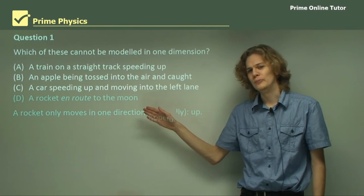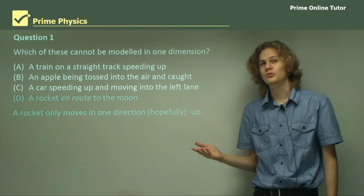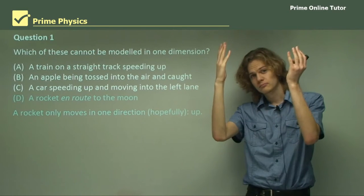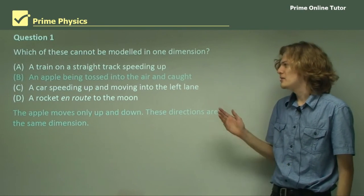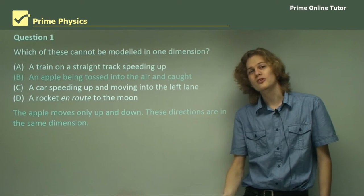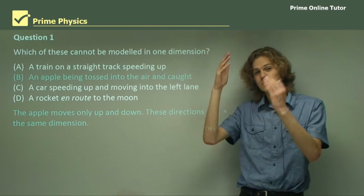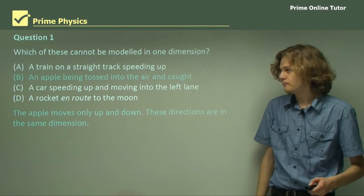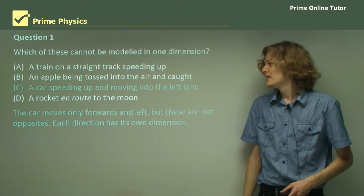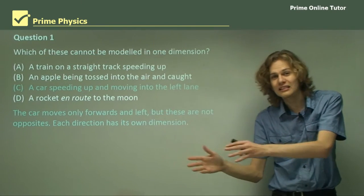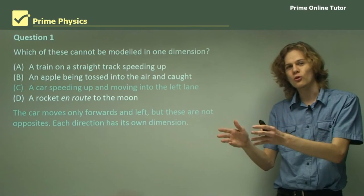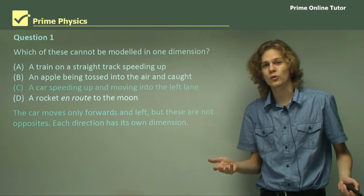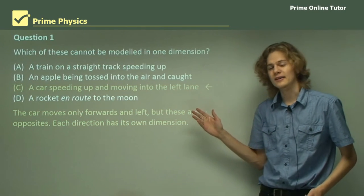Option B: an apple being tossed into the air and caught. Unlike a rocket, an apple goes up and then down, but this is still only one dimension because up is the opposite of down. So this is a one-dimensional situation and is not the correct answer. Our final option is C: a car speeding up and moving into the left lane. The car is going forward and also moving left — a different direction. Because we have the left-right axis involved, it's a two-dimensional situation. So C is the right answer.